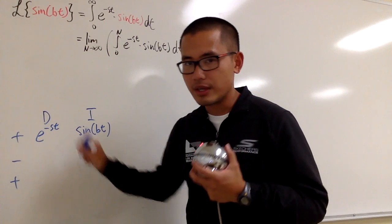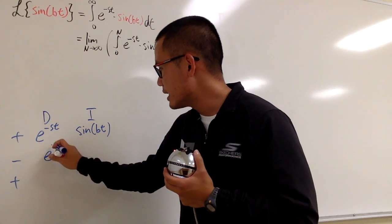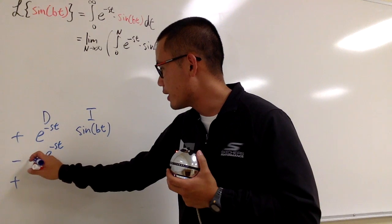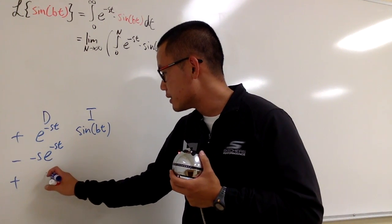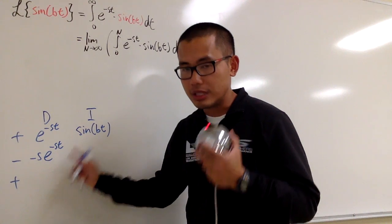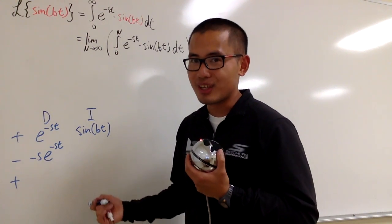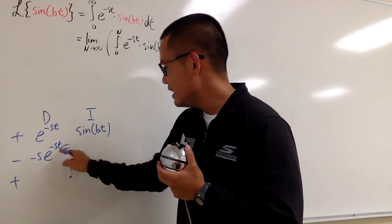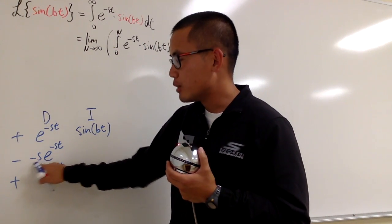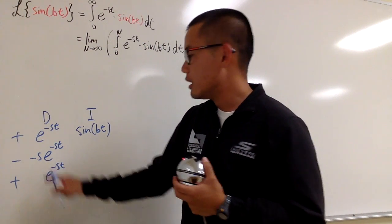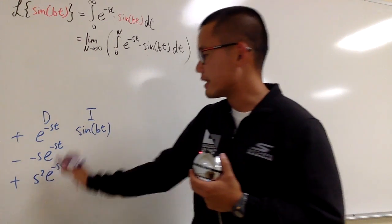Let's differentiate e to the negative st. I differentiate once and get e to the negative st with a negative s in front. Do it again — remember, it's with respect to t, and s is a constant, so I don't have to use the product rule. I get e to the negative st, and then negative s times negative s becomes positive s squared.